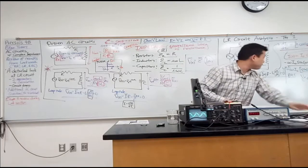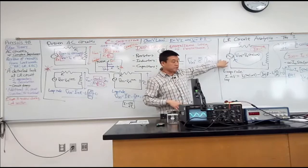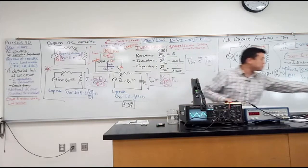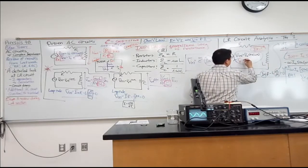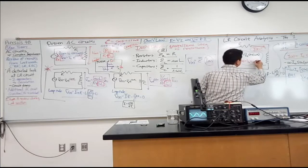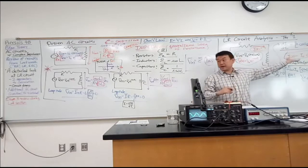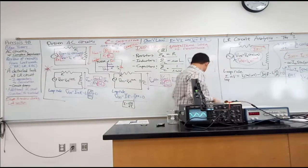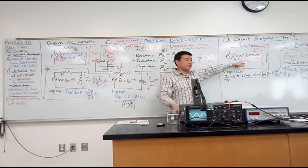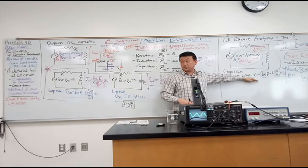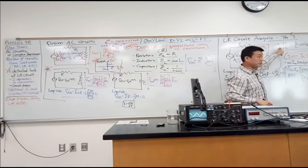I'm going to leave a lot of the expressions in place and just make modifications for using this complex input voltage, V naught times e to the i omega t, and looking for a complex current as my answer. So when I use complex functions as my input and output, my differential equation doesn't change. It's still the same differential equation I'll use.